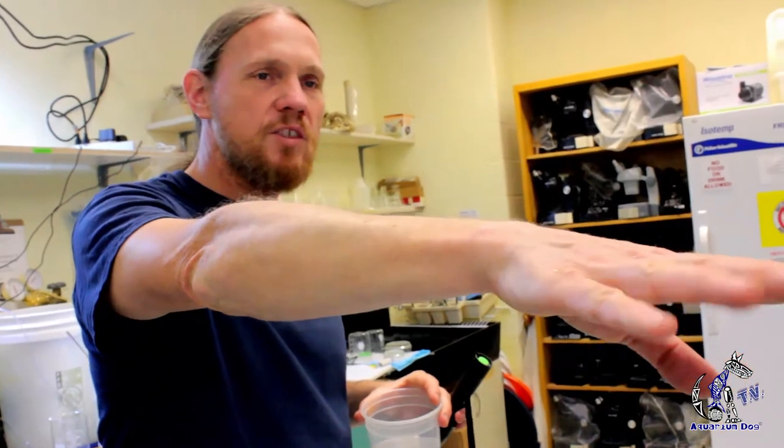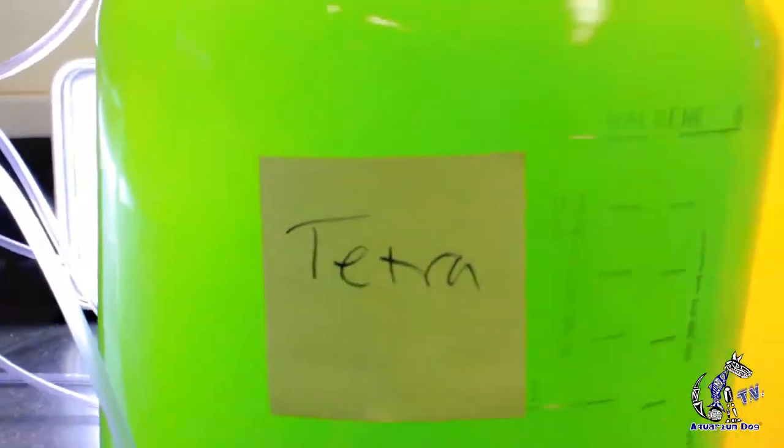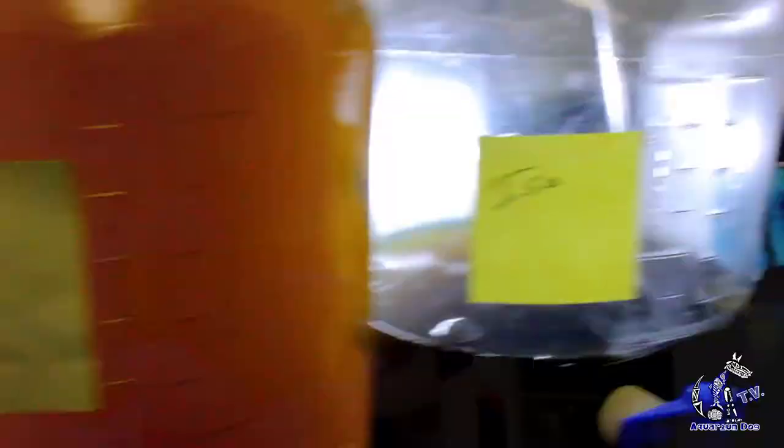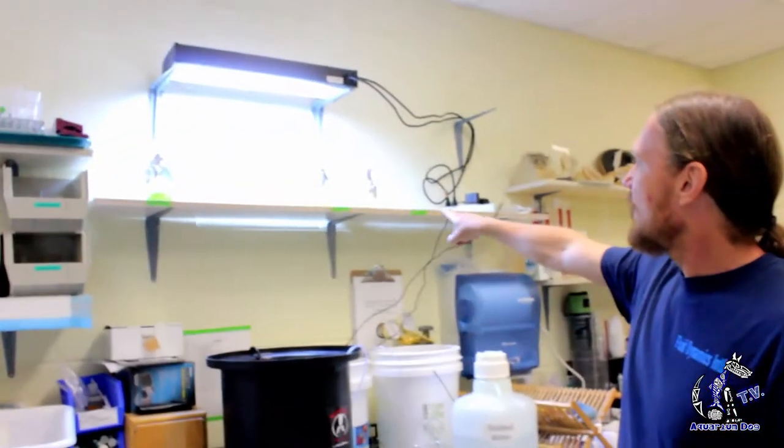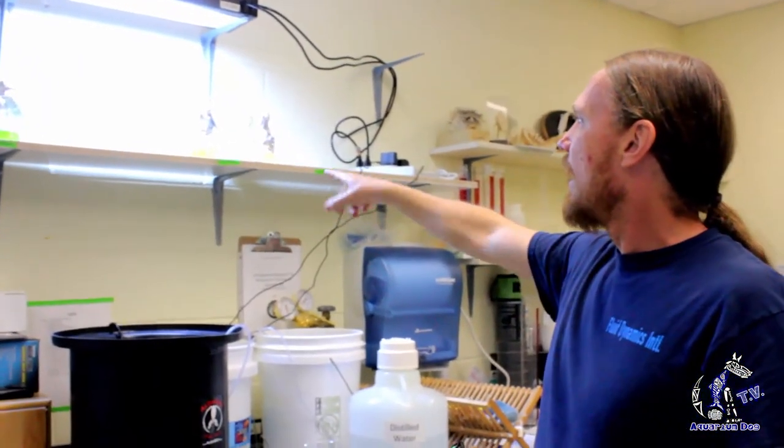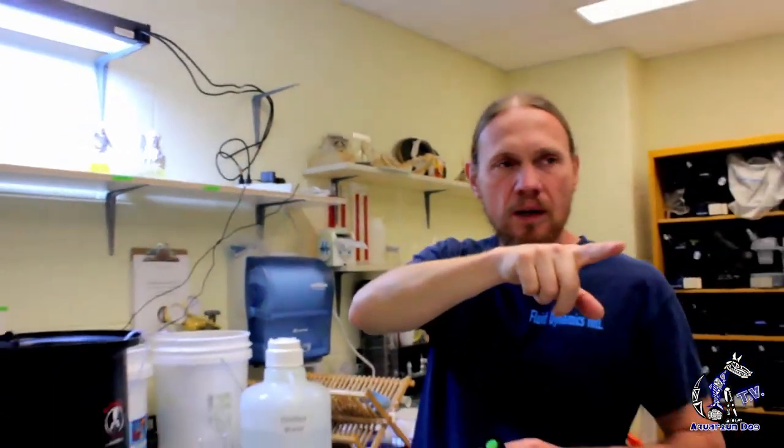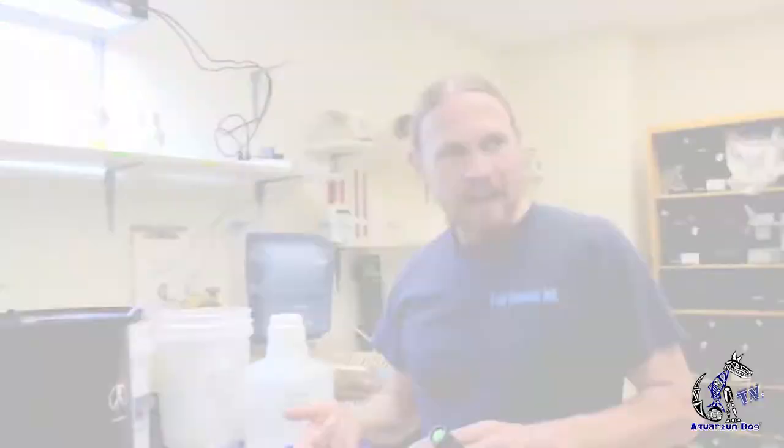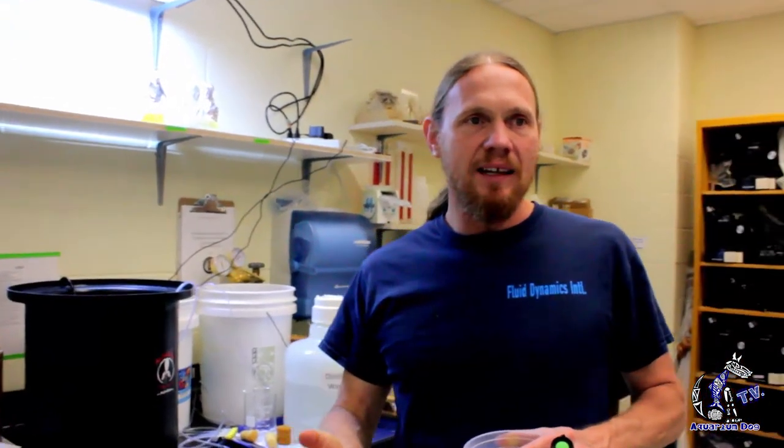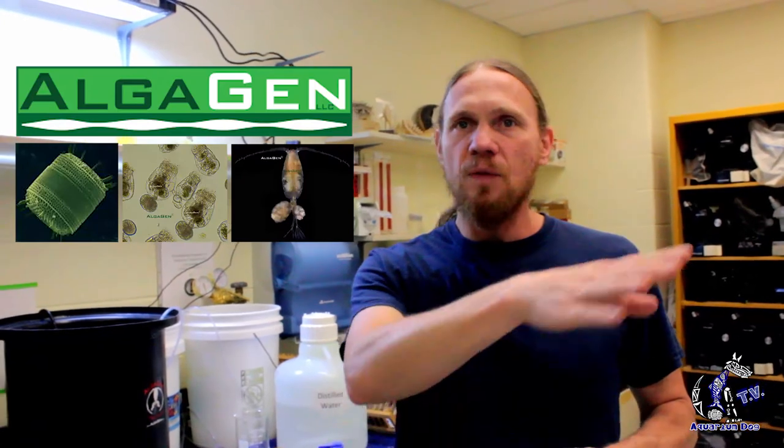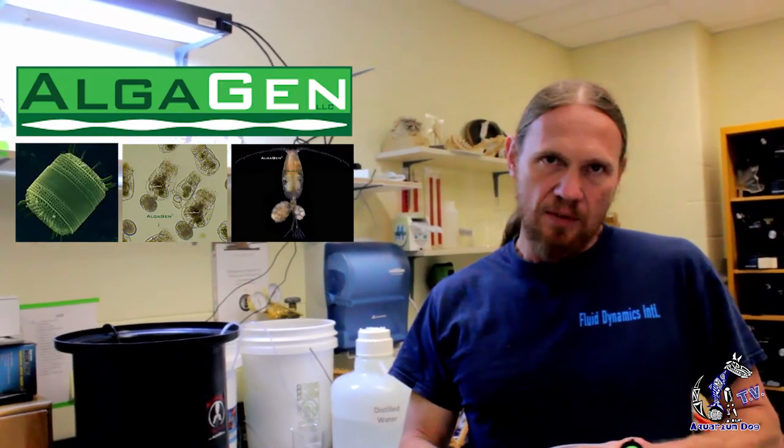But right now it's also doubling as my phytoplankton culture room. So I've got over there three different species of phytoplankton: Tetraselmis, Chaetoceros, and Isochrysis. And I've got their primary cultures up here. So I culture these guys. I grow them up into about a two gallon container. Get them as dense as I can using some nutrients, sterilized seawater, and a little CO2 injection. And then I'll use that phytoplankton to feed the copepods and the rotifers that I feed to the larval fish.